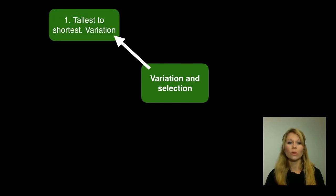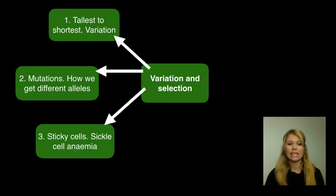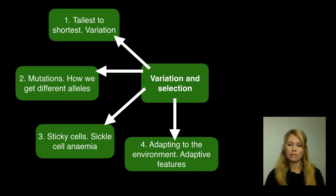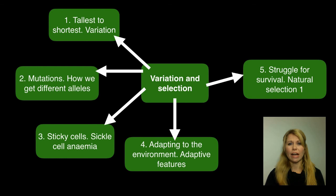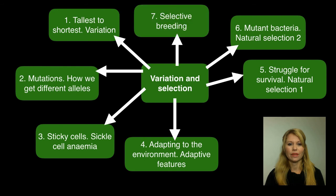Under the section variation and selection, you'll find tallest to shortest variation, mutations, how we get different alleles, sickle cell anemia, adapting to the environment, adaptive features and structures, and struggle for survival. I've divided natural selection into two parts — the second part looks at antibiotic resistant bacteria as well as other examples of natural selection. And then finally there's selective breeding.